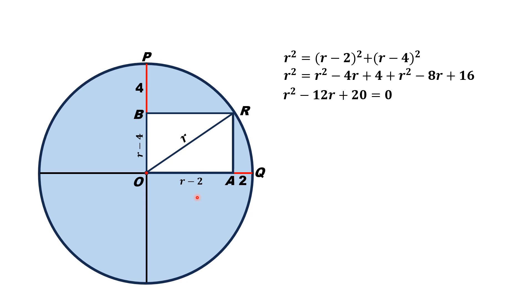Factorizing this quadratic equation, we will get r² - 2r - 10r + 20 = 0. From the first two terms we get r, and from the last two terms we get (r - 10), giving us r(r - 2) - 10(r - 2) = 0, which factors to (r - 10)(r - 2) = 0.